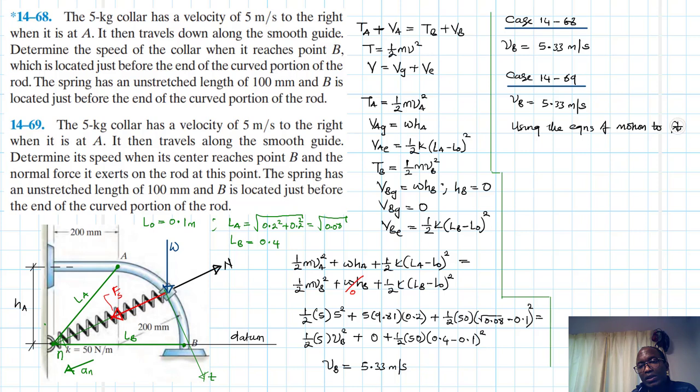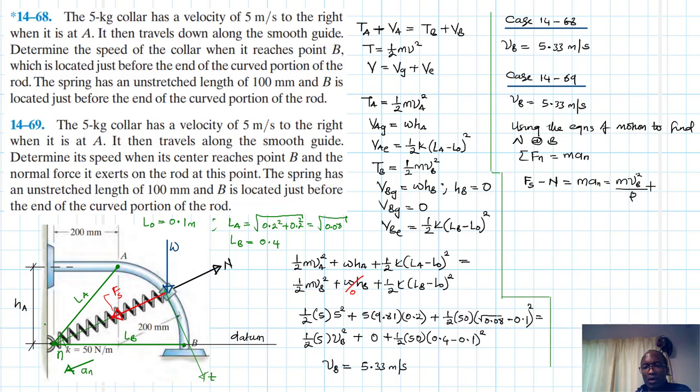And then they are also asking us to find the normal force. So we can apply the equations of motion. We'll say using the equations of motion to find N, summation of forces in the n-axis equals M times a_n. Mind you, we are at B, so we need to find N at B. At B, all these normal force and the spring force, they'll all be in the horizontal axis.